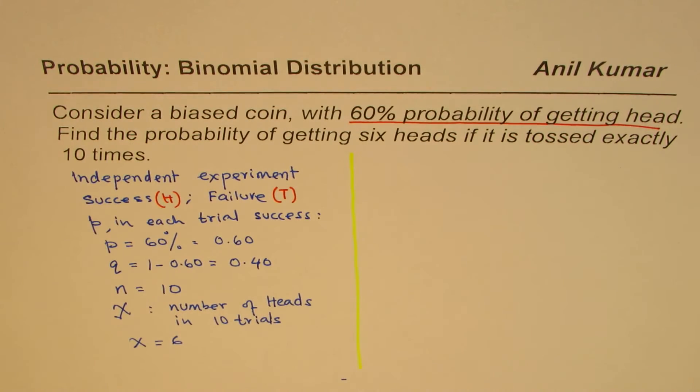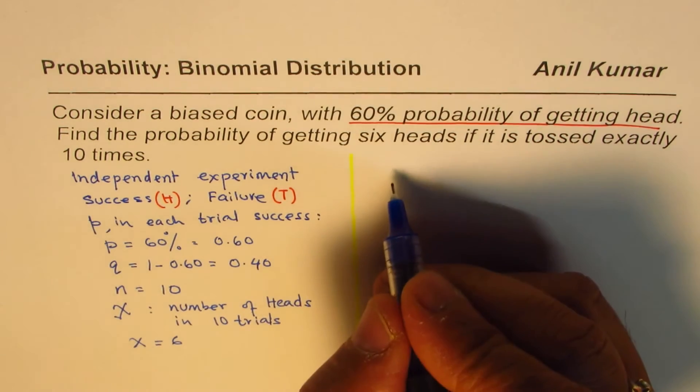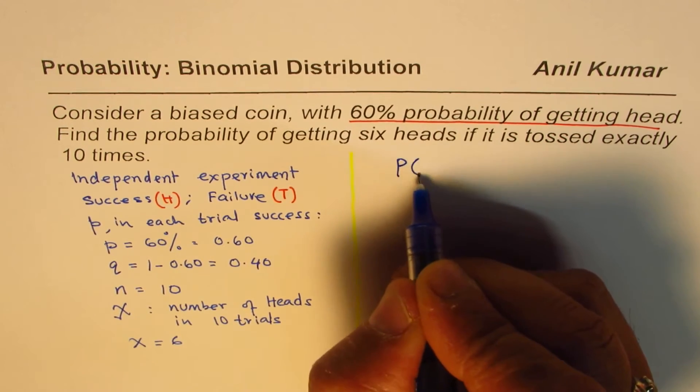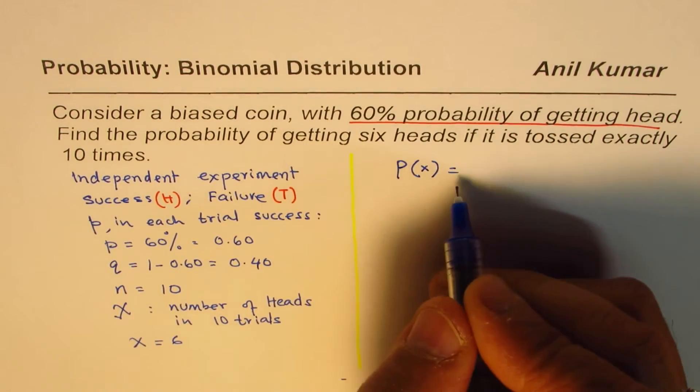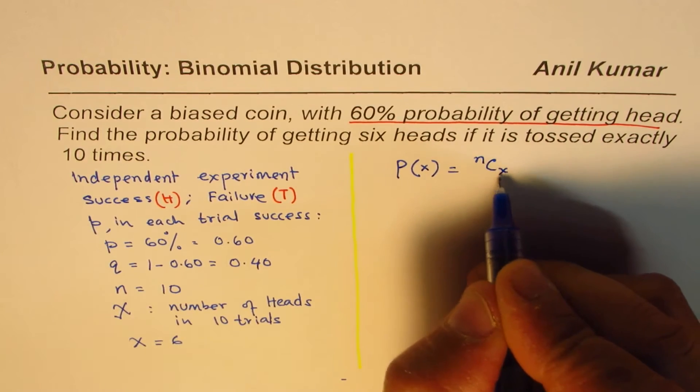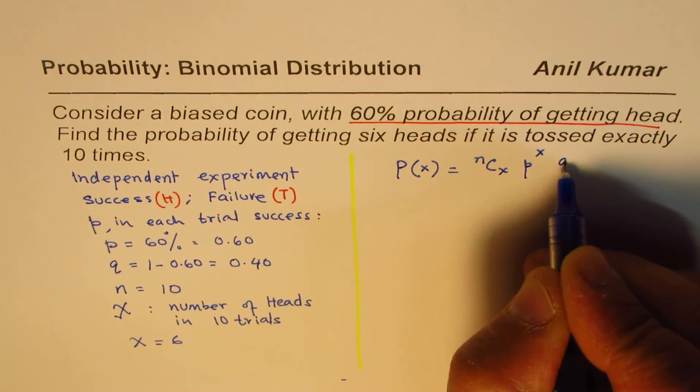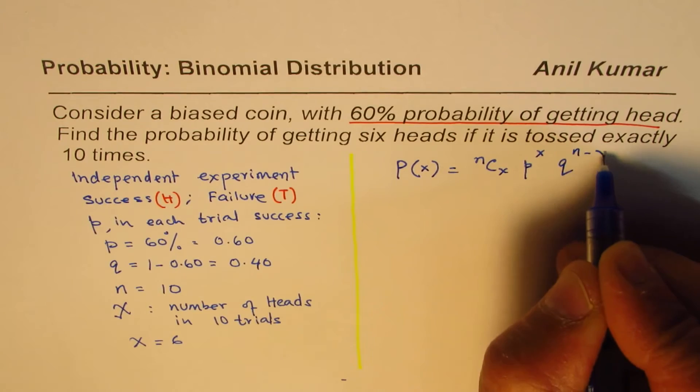What do we need to find? Probability of getting 6 heads. So we can use the formula. In general, the formula for binomial distribution is nCx p to the power of x, q to the power of n minus x.